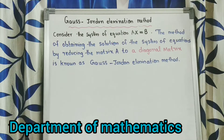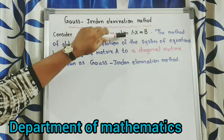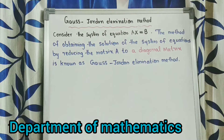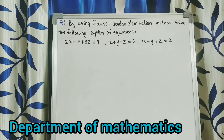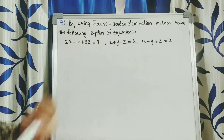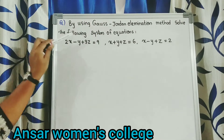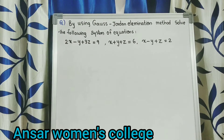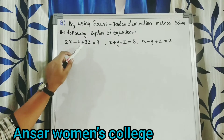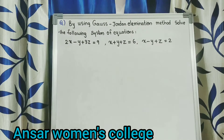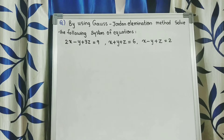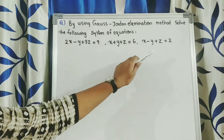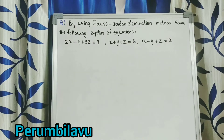In this method we convert matrix A to a diagonal matrix and then find the solution of the system of equations. Question: by using Gauss-Jordan Elimination Method, solve the following system of equations: 2X minus Y plus 3Z equal to 9, X plus Y plus Z equal to 6, X minus Y plus Z equal to 2.